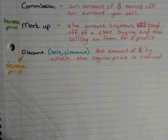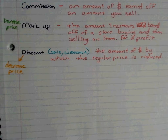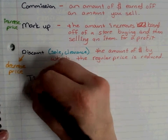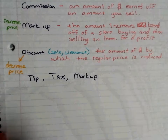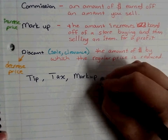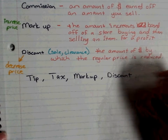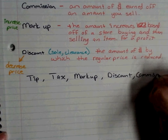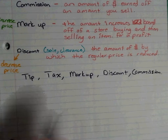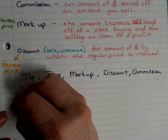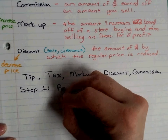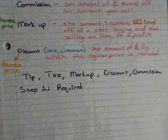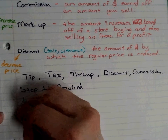Now solving these: whenever we're solving — whether it's tips, tax, discounts, markups, or commissions — it's all the same process. Step one is the same no matter what. Step one is required. You have to do step one, which is to find the subtotal.